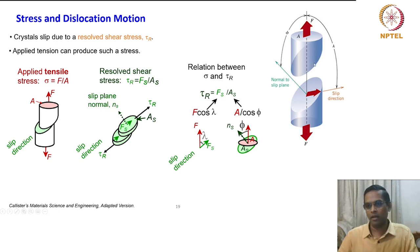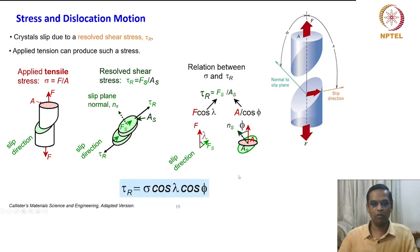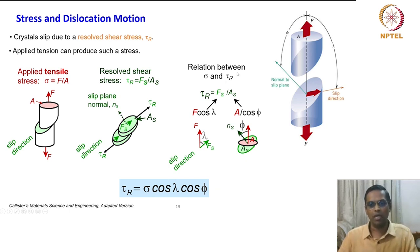Similarly, the cross-sectional area is A, but the area actually subjected to the shear force is given by A divided by cos phi, because of this angular relationship. With these substitutions, tau_r equals sigma cos lambda cos phi — that is the relation between sigma and tau_r.